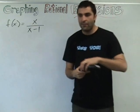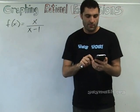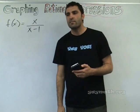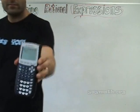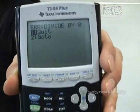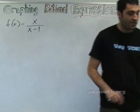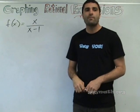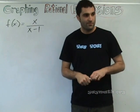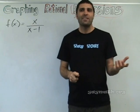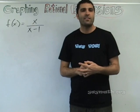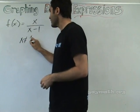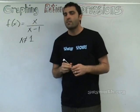Those of you with calculators available, please do five divided by zero. What's the error? Divide by zero. Right, you can't divide by zero. So, in other words, are there values for x in which the denominator would be zero? So, what number would that be? One. So, x can't be equal to one.